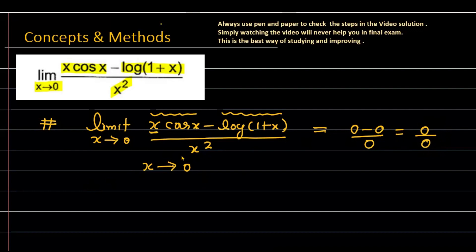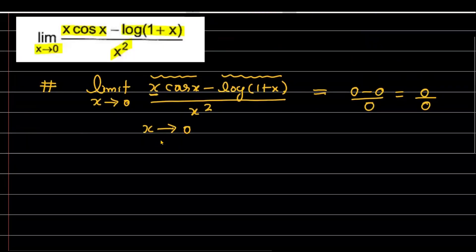Now, if you have a function in the 0/0 format whose limit you need to find, you have two options: either manipulate the function a little and then find its limit, or apply L'Hôpital's rule. I will share L'Hôpital's rule in this question, but first let's see how to solve it without L'Hôpital — the option available is to use series expansions.